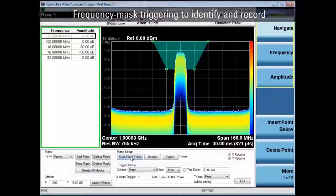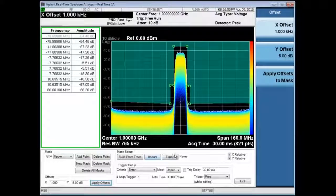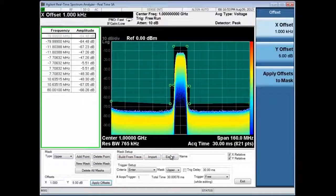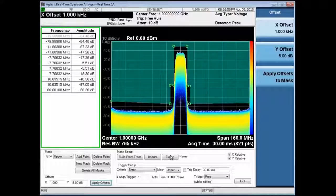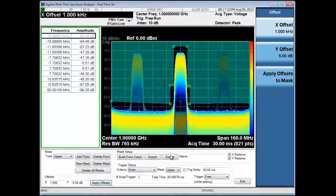This modulated carrier's unique hop sequence is longer than the analyzer's available memory, and hence the frequency mask trigger is needed to only record or measure the desired portion of the waveform. You can define and save mask settings to be used later.